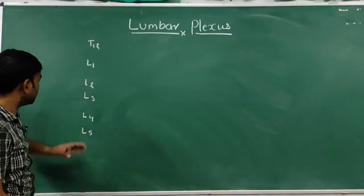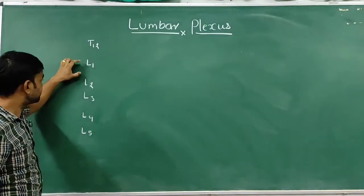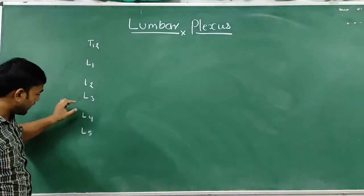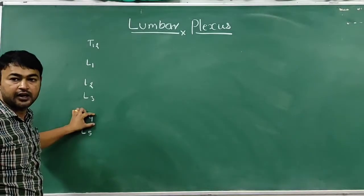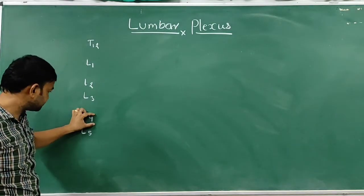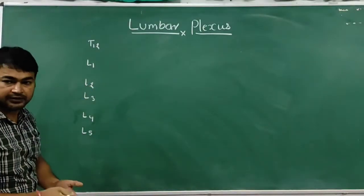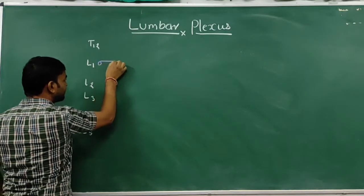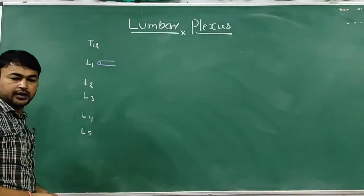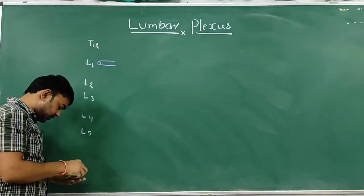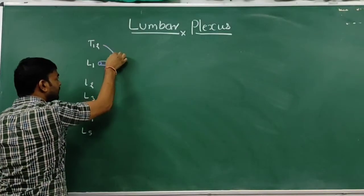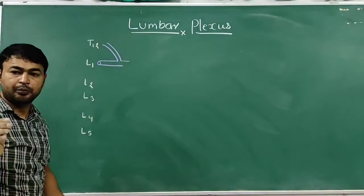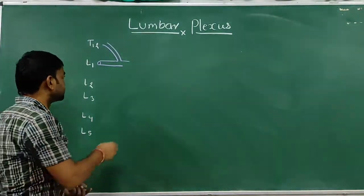The lumbar plexus is mainly formed by L1, L2, L3, and the upper larger part of L4. The ventral rami of L5 also contribute. The ventral ramus from L1 is supplemented by a branch from T12, and divides into small and larger branches.